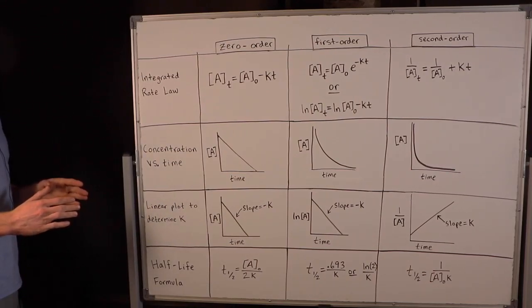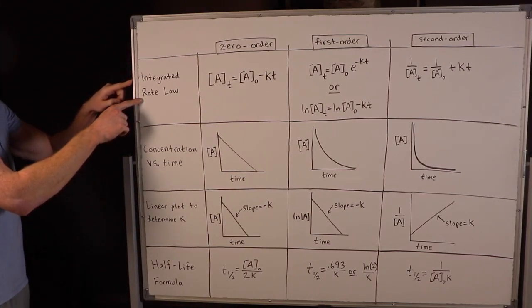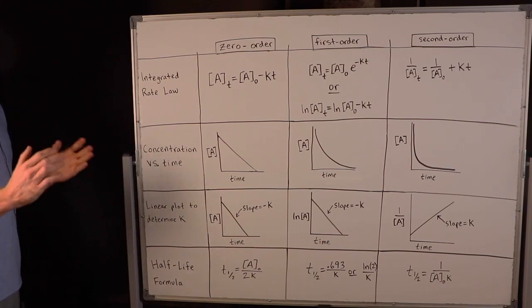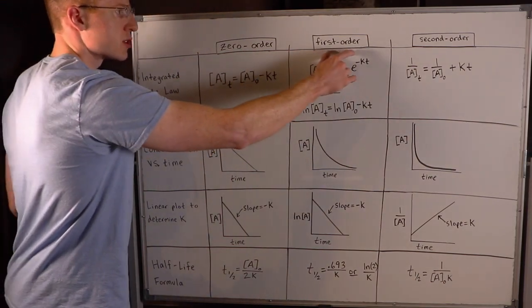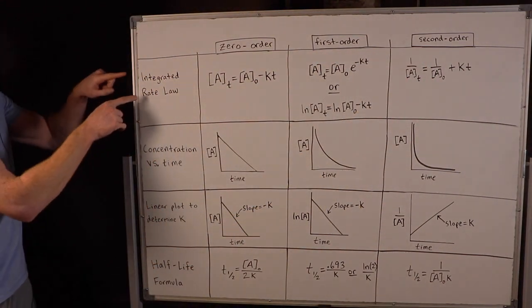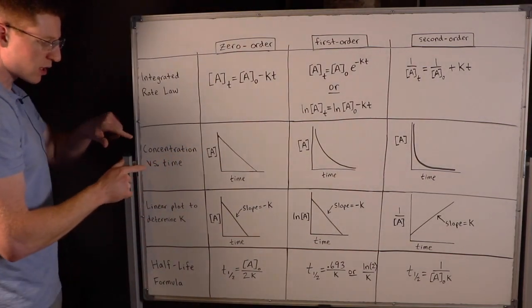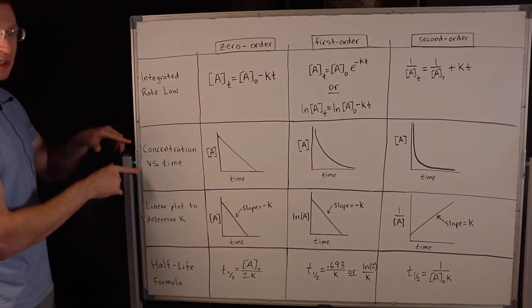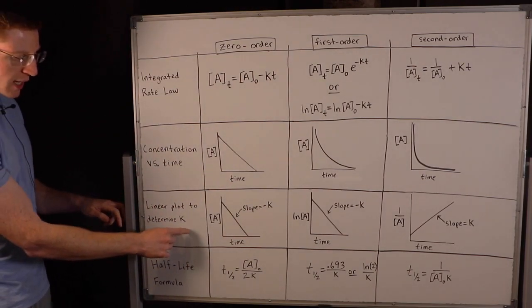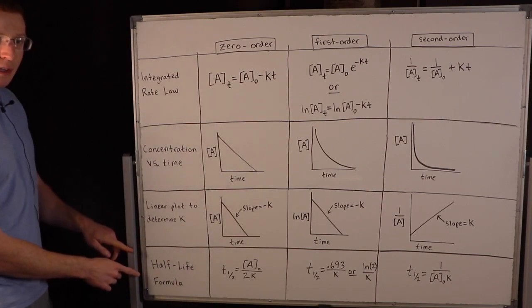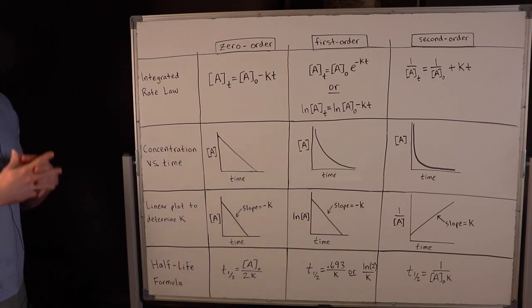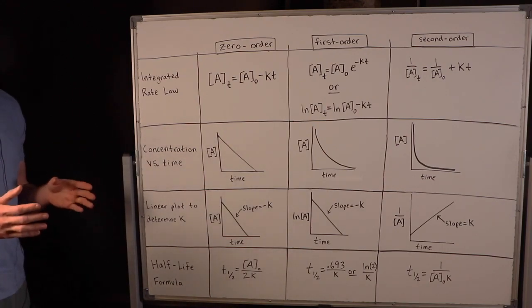Whenever you're doing chemical kinetics problems, especially integrated rate law problems, this information is excellent to have memorized. It essentially breaks down for a zero-order, first-order, and second-order process what the integrated rate law is going to be, what the concentration of the reactant versus time looks like graphically, what the linear plot to determine the rate constant is going to be, and also the half-life formulas. So consider taking a screenshot or copying it down for your own reference.